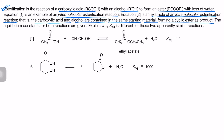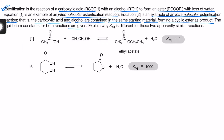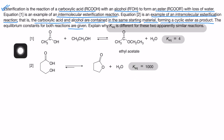The intramolecular reaction forms a cyclic ester, also known as a lactone, as the product. The equilibrium constants for both reactions are given: 4 and 1000. The question is: why is the difference in K_equilibrium so high for these two apparently similar reactions?